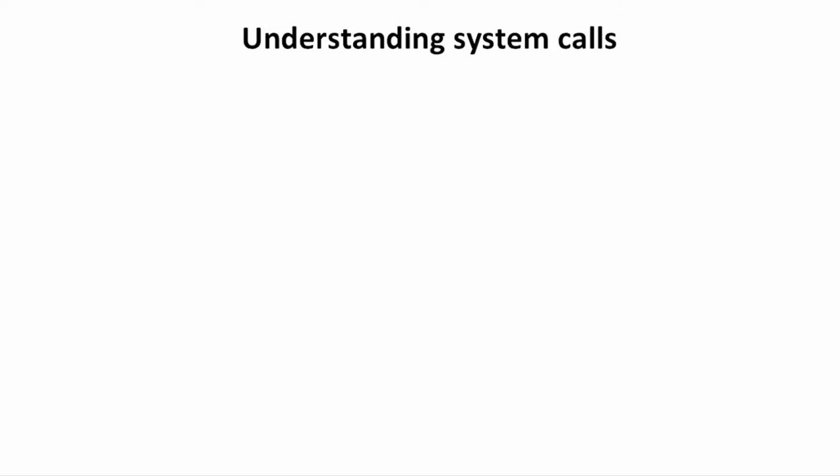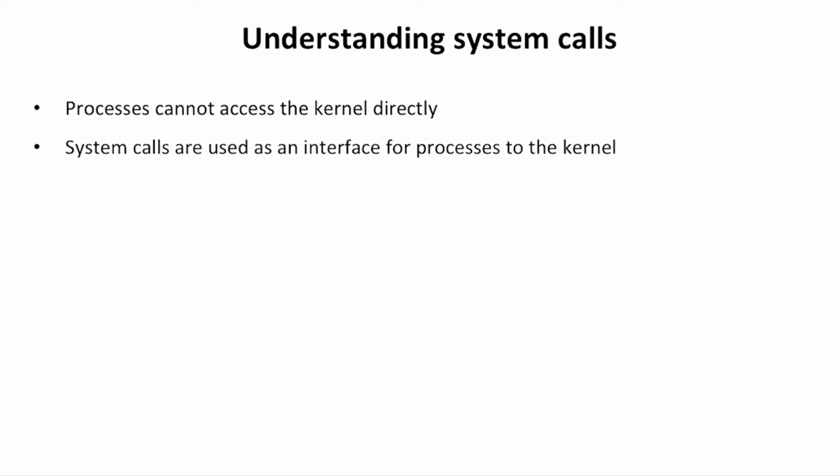System calls are an essential part of the Linux operating system. The issue is that processes cannot access the kernel directly. In order to access the kernel, system calls are defined, and these system calls are used as an interface for the processes to the kernel. So from within the process, a library function is executed to address a system call, with the result that the kernel is going to do something.